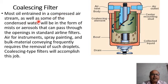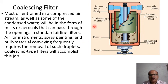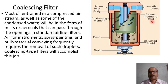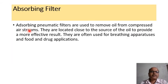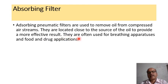Most oil and water entrained in a compressed air stream, as well as some condensed water, will be in the form of mist or aerosols that can pass through the openings in standard airline filters. Air for instruments, spray painting, and bulk material conveying frequently requires the removal of such droplets; a coalescing type filter will accomplish this job. The coalescing filter comprises: air inlet, body, coalescing element, center mounting, collected liquid, and drain. Adsorbing pneumatic filters are used to remove oil from compressed air streams, located close to the source of oil, and are often used for breathing apparatus and food and drug applications.